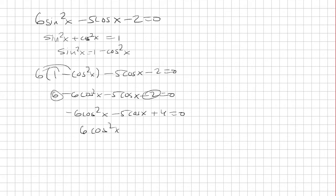Now I'm going to multiply both sides by negative 1. Then we factor this as 2 cosine x minus 1 times 3 cosine x plus 4. Setting each one equal to 0.